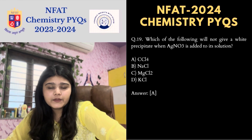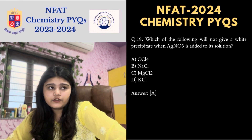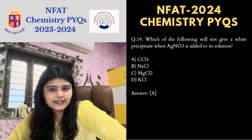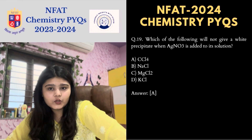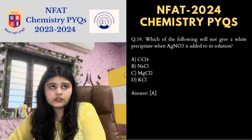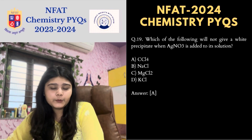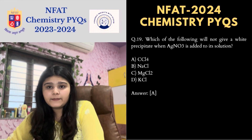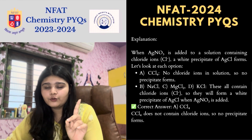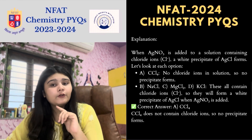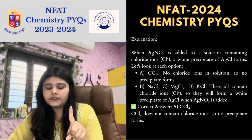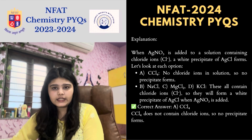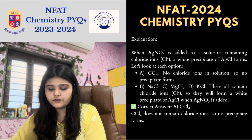Next MCQ: which of the following will not give a white precipitate when AgNO₃ is added to its solution? When AgNO₃ reacts with compounds containing Cl⁻ ions, it gives a white precipitate. However, in the case of CCl₄, it will not give a white precipitate. That's why option A is the correct answer.